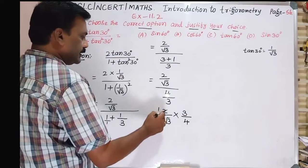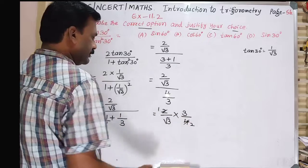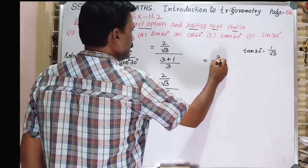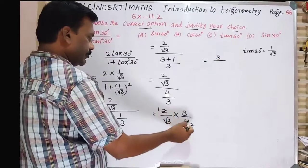We get 2 cancels with 4 giving 2, and we have 3 divided by 2√3.